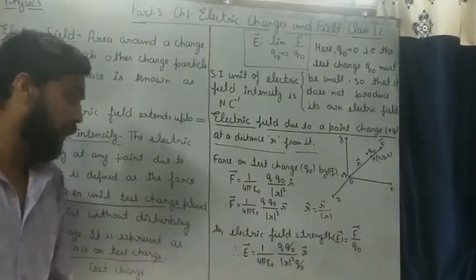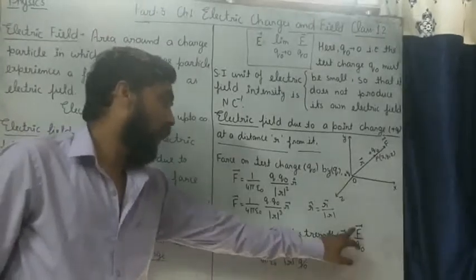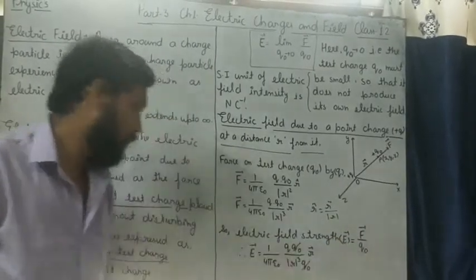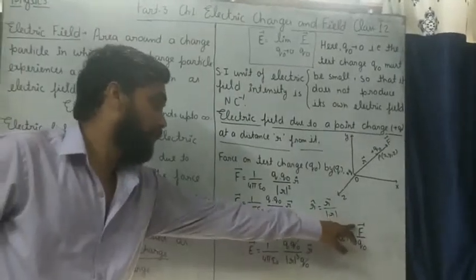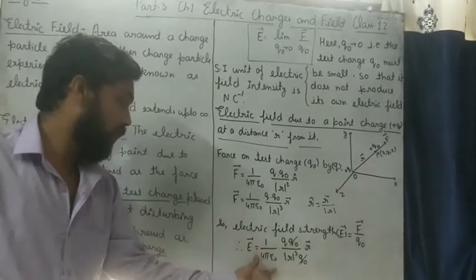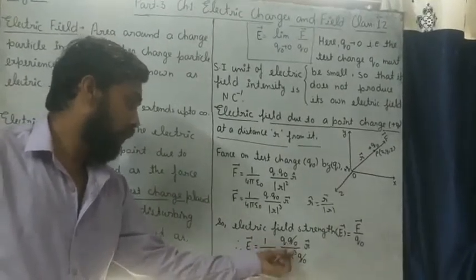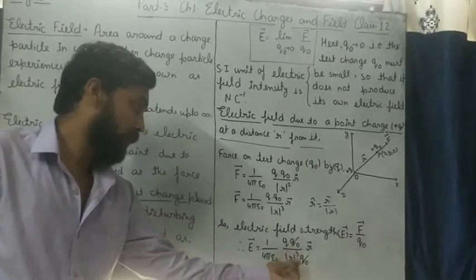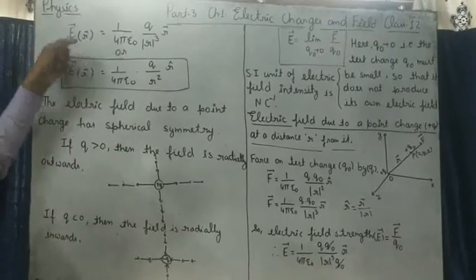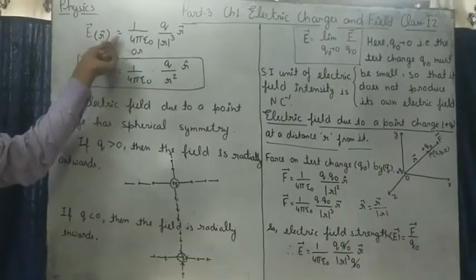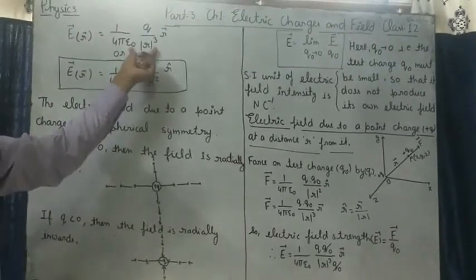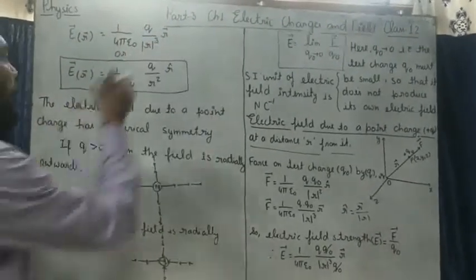Electric field strength E = F/Q₀. Substituting the electrostatic force, E = (1/4πε₀)(Q/|R|³)R. Therefore, E(R) = (1/4πε₀)(Q/|R|²)R̂.